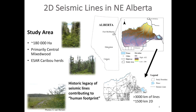I focused my study on 2D, or wider legacy seismic lines in northeastern Alberta. The study area was just south of Fort McMurray in the Stony Mountain 800 area, approximately 180,000 hectares, primarily in the central mixed wood. It contained caribou herds and had a very large network of legacy seismic lines — just over 3,000 kilometers of lines, about half of which were 2D or legacy seismic lines.